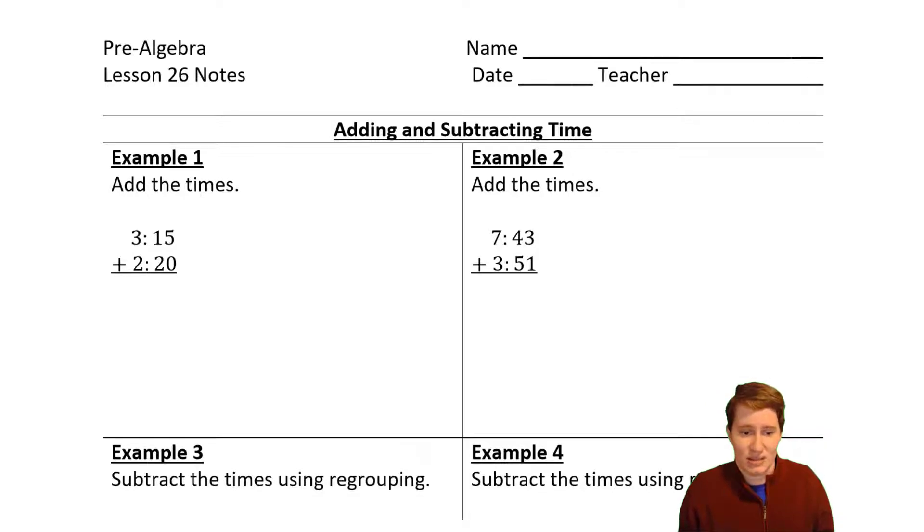On example one, we're adding these times. There's not an AM or PM. This is supposed to just be like three hours, 15 minutes plus two hours, 20 minutes. So when we do 15 plus 20, we only carry a one to the hours if that's more than 60, right? Because if that's however many minutes that is, if it ends up being more than 60, we have to add to our hours.